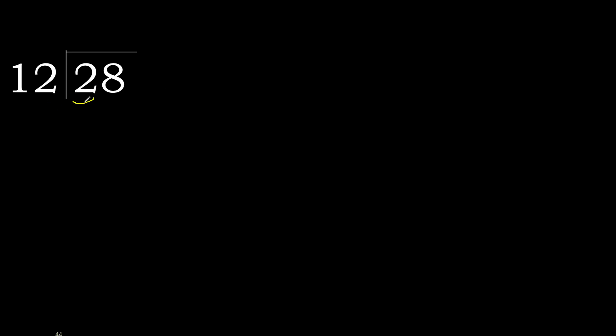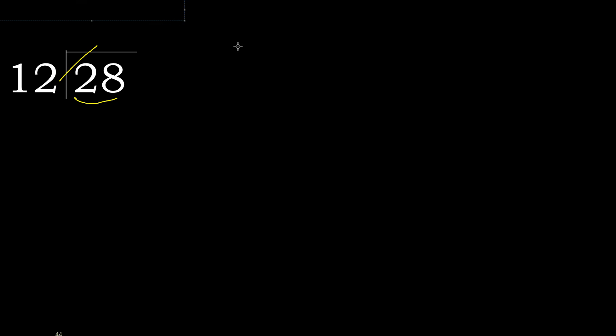28 divided by 12. 2 is less, therefore next. 28 is not less, therefore we work with 28. We need to find which number, when multiplied by 12, is nearest to 28 but not greater.